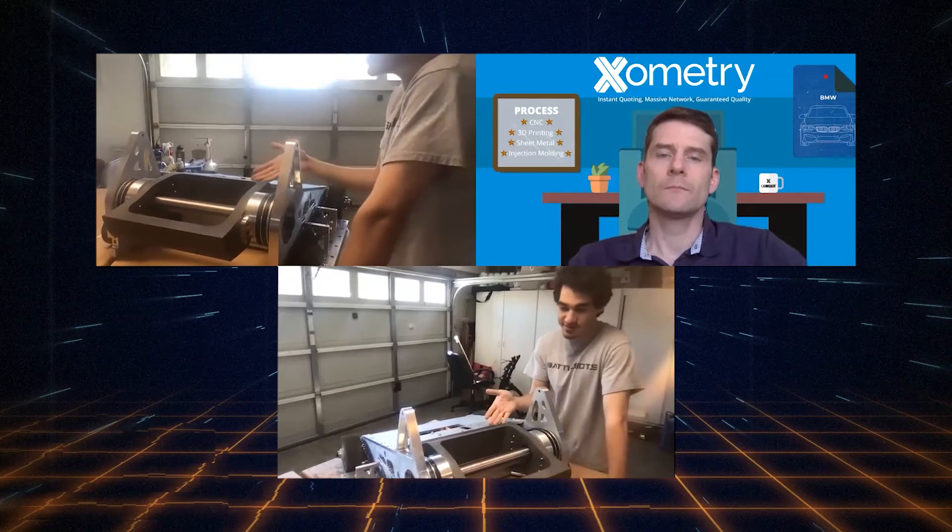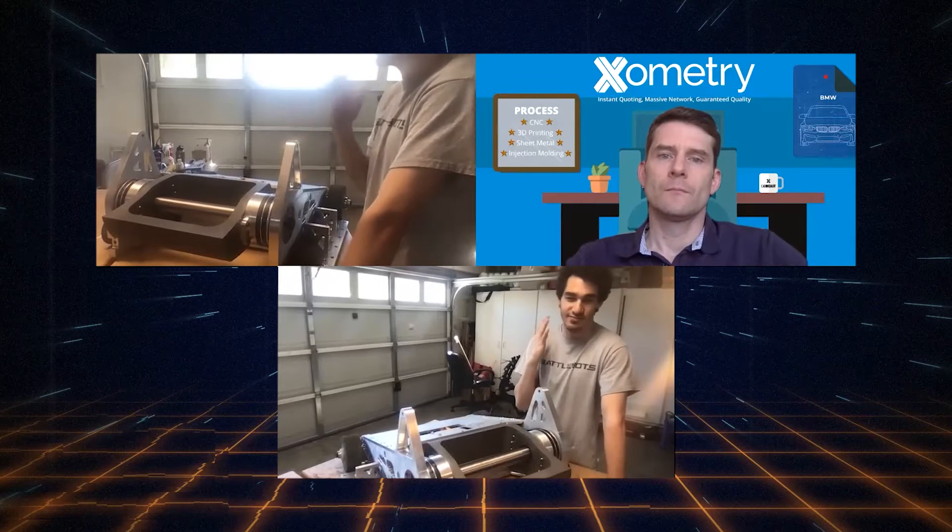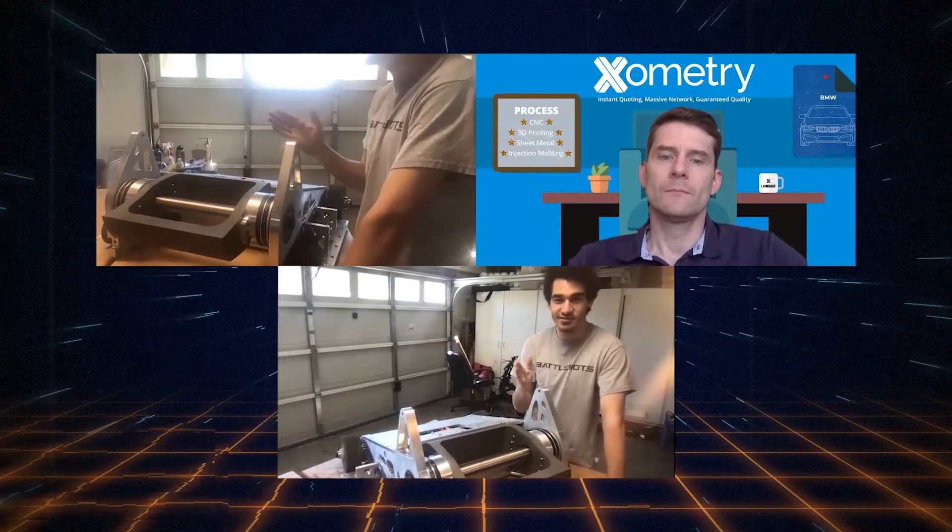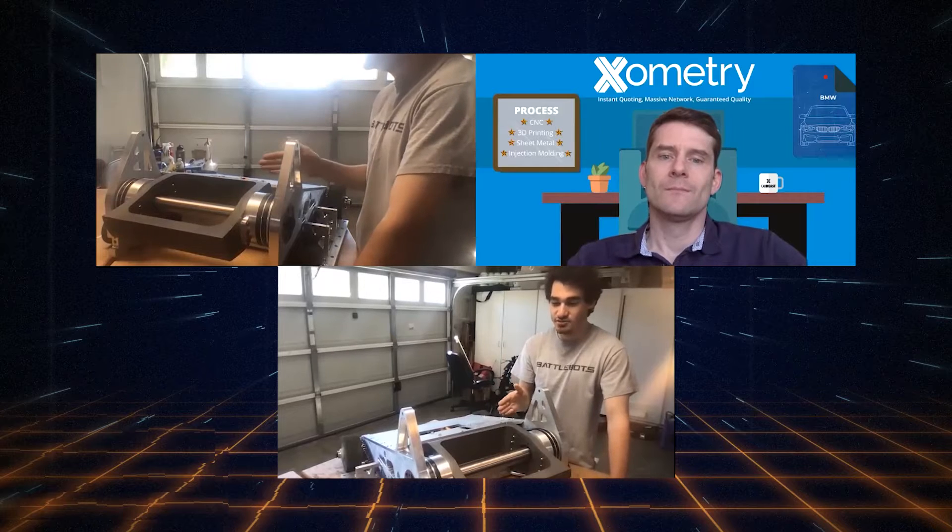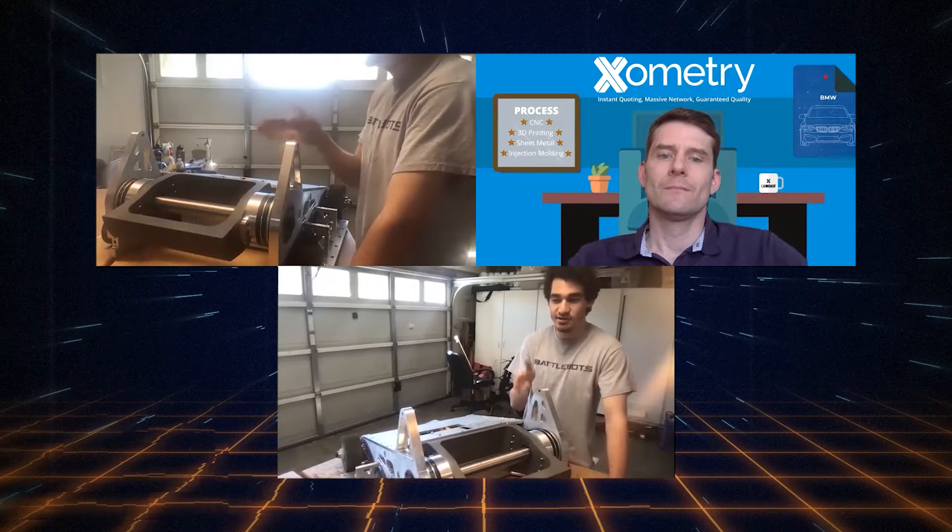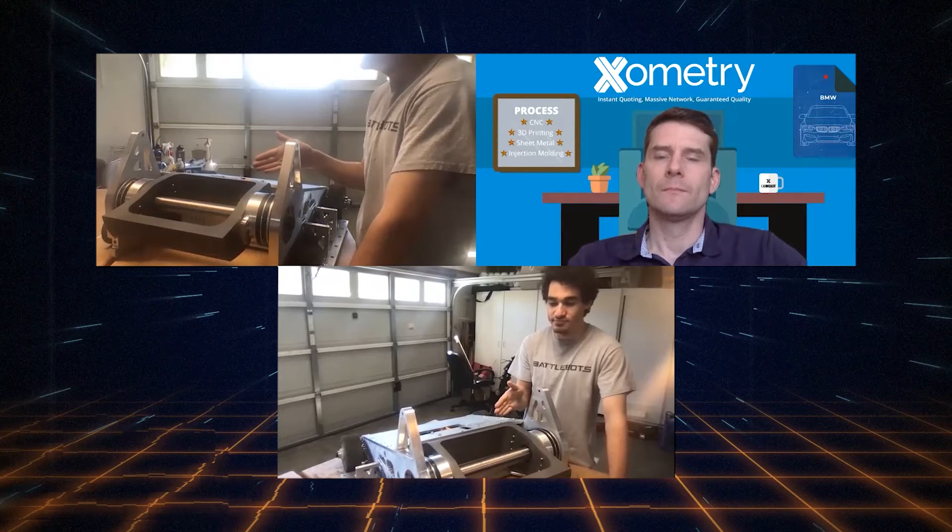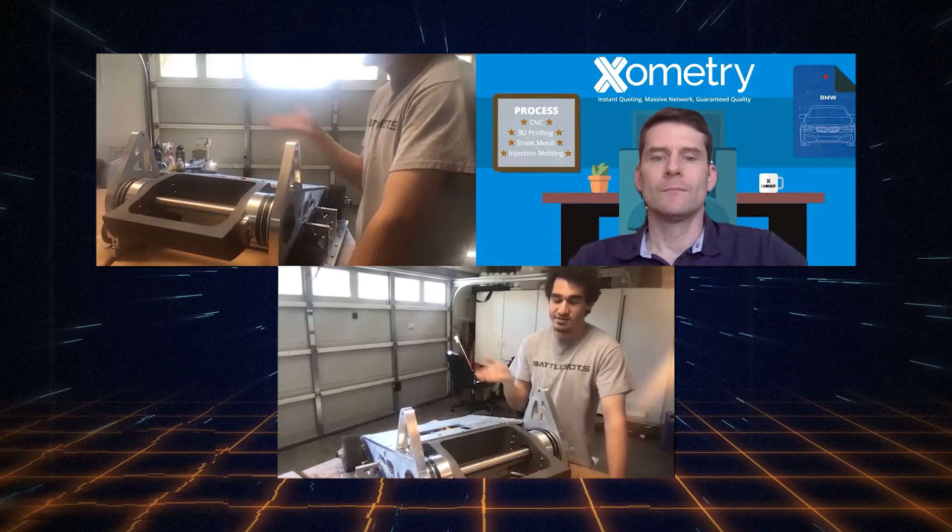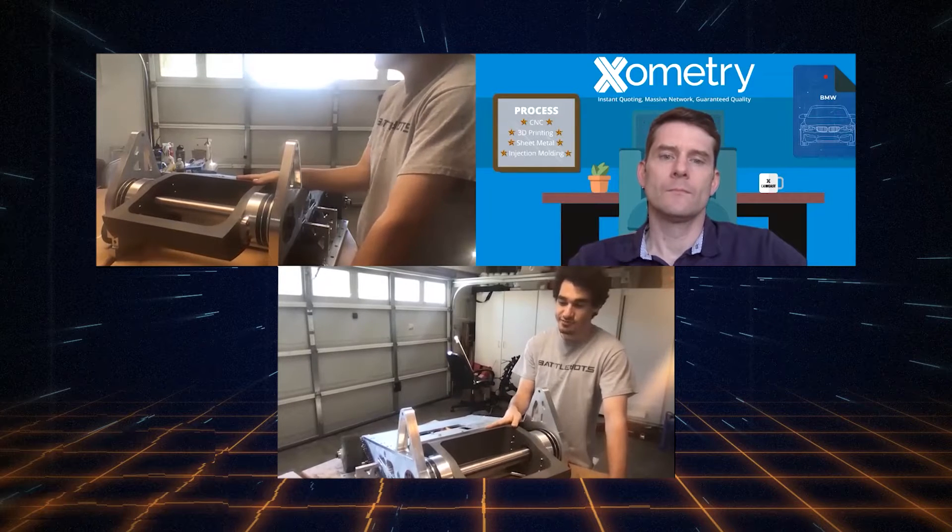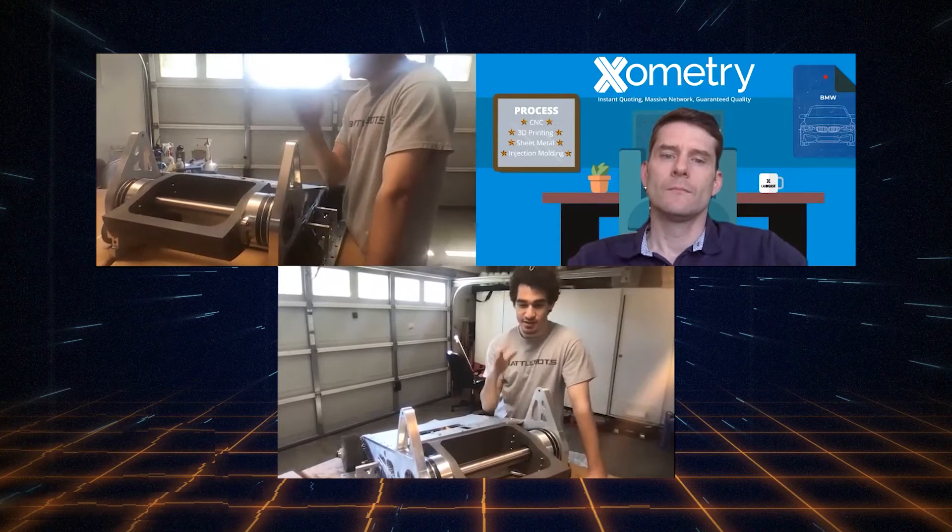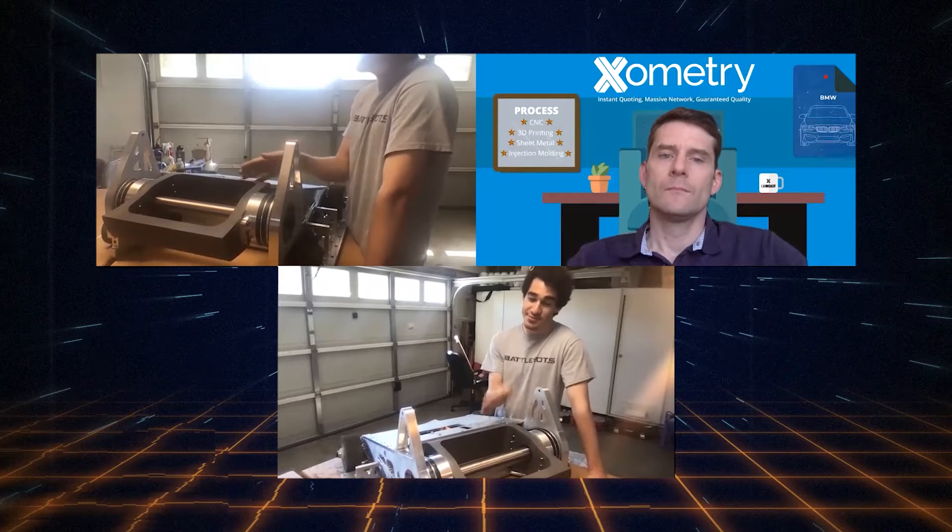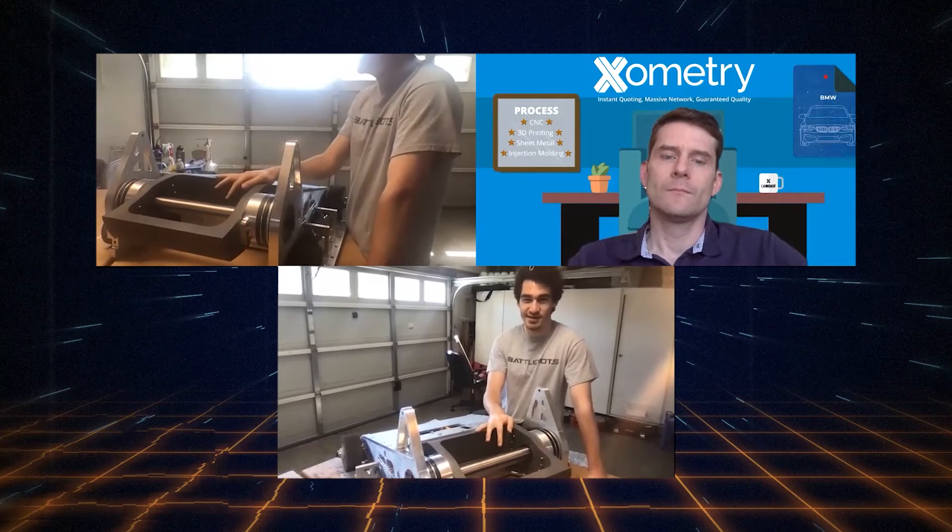But we're just absolutely in love with this part. It was obviously made by a professional, super high quality. We were told by every other team, do not choose the international option. You're likely going to get a part from China that's a different type of steel than 4140, some sort of mild steel that might be less quality, but they were wrong. It's 4140. We got that tested at the hardening shop. We were not cheaped out, and we got a really good price. So we're super happy about this drum spinner.